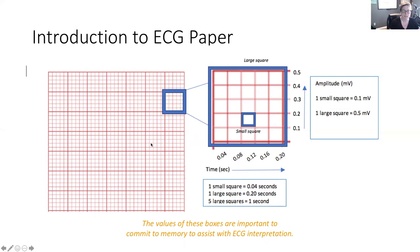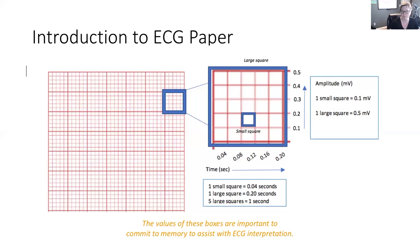This is known as the horizontal axis. Amplitude — the height or depth of the waveform — is measured on the vertical axis as waveforms move up and down. This is measured in millivolts: one small square equals 0.1 millivolts and five small squares, or one large square, equals 0.5 millivolts. The values of these boxes are important to commit to memory.